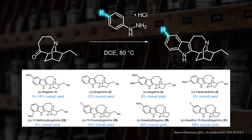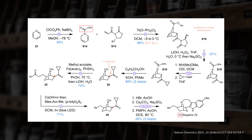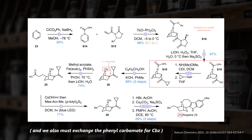Ibogaine only occurs as the minus enantiomer in nature, but the prior synthesis gave a racemic mixture. To obtain just the natural or unnatural enantiomer, you could separate them by crystallization or inject an enantioselective step. The final solution involved attaching an Evans oxazolidinone to the dienophile to make the Diels-Alder reaction asymmetric. Notably, the nitrogen had to be protected with a phenyl carbamate — in the asymmetric variant, the initial CBZ group gave much lower yield and selectivity, likely because Lewis acid partially deprotects CBZ and conformational flexibility reduces selectivity.